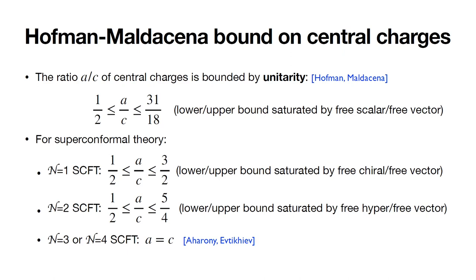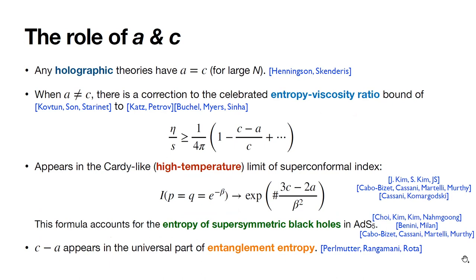These numbers are rather simple to compute — they basically count the number of fields in a sense, but capture interesting aspects of field theory. When A and C are not equal, it gives rise to corrections to the celebrated entropy-to-viscosity ratio eta/S, which is bounded below by 1/4π. But if A is not equal to C, there's a correction depending on the sign of C minus A. It's also known that certain combinations of central charges appear in the Cardy-like limit of the superconformal index, capturing the high-energy asymptotic number of states.